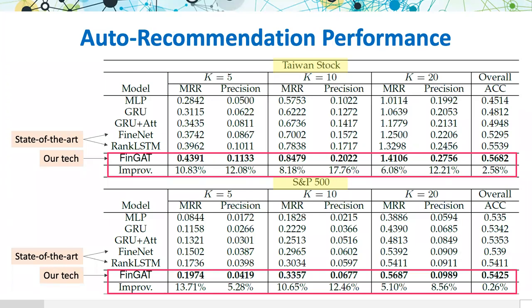We evaluate our FinGET with three real-world datasets, including Taiwan stock, S&P 500, and NASDAQ index. The results show that FinGET outperforms the current benchmark methods with significant improvements in terms of both the precision and the ranking metric MRR.